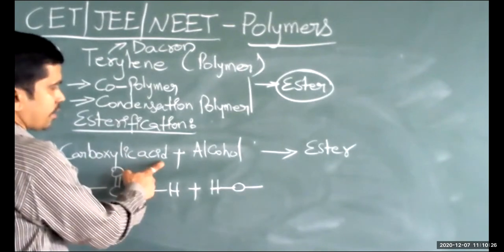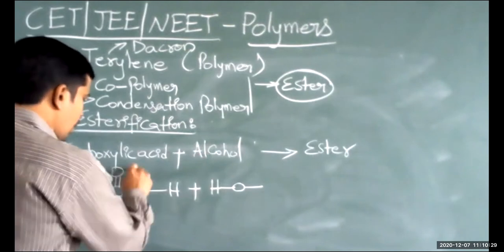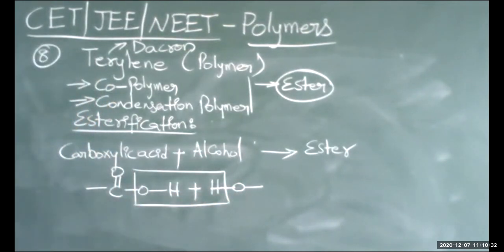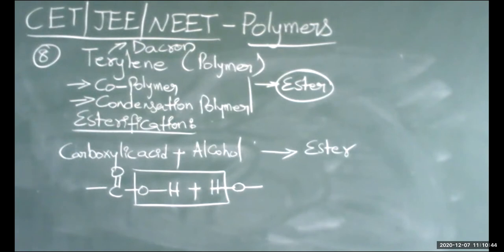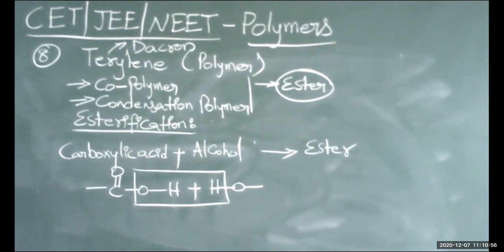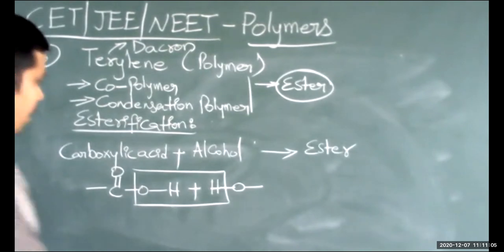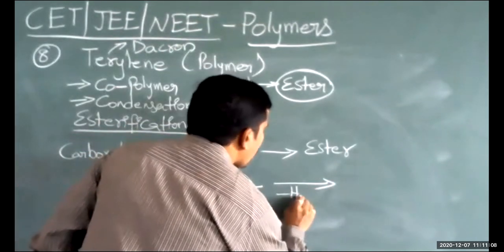When carboxylic acid reacts with alcohol, removal of a water molecule takes place. Whenever a polymer is formed by removal of small molecules, that polymerization is called condensation polymerization.